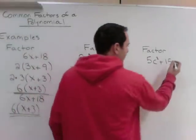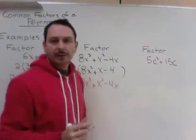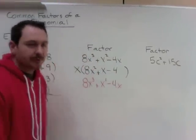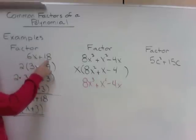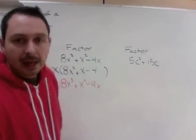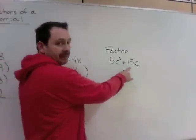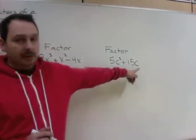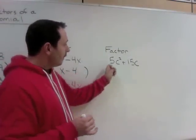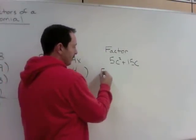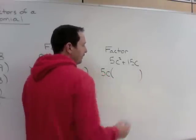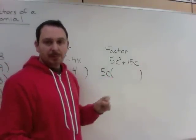And now our last example here, I missed a part when I wrote that up, factor 5c squared plus 15c. So if we look back to our first question here, they shared the number 6 in common. The next example shared an x in each piece. And our next one here, 5 and 15, well they share something in common, but so does the letters as well. So we need to take out all parts they have in common. 5 and 15 share a 5 in common. C squared and c share a c in common. So I'm going to divide 5c out of each piece.